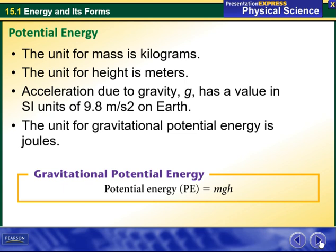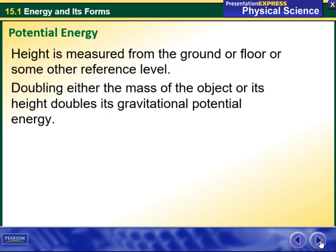Mass times height times the acceleration due to gravity, which is g, which is a constant that is always going to be given to you, which is 9.8 meters per second squared. Height is measured from the ground or floor or some other reference level. Doubling either the mass of the object or its height will double its gravitational potential energy.